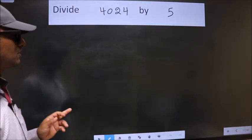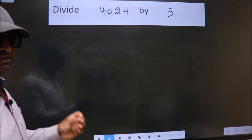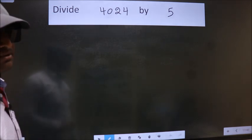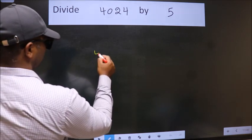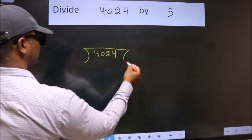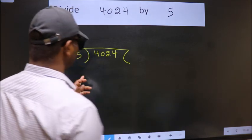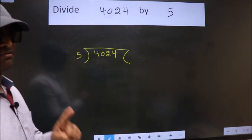Divide 4024 by 5. To do this division, we should frame it in this way. 4024 here, 5 here. This is your step 1.